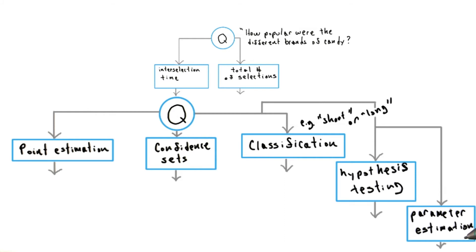In parameter estimation, we try to do things like find the parameter of a Poisson distribution, or find the bandwidth value on a kernel density estimation, which we'll talk a lot more about in a later lesson.